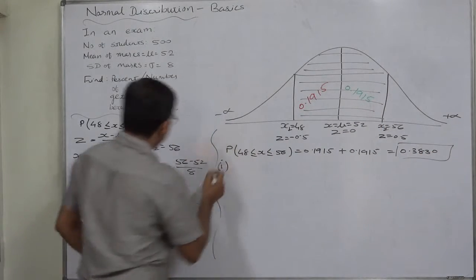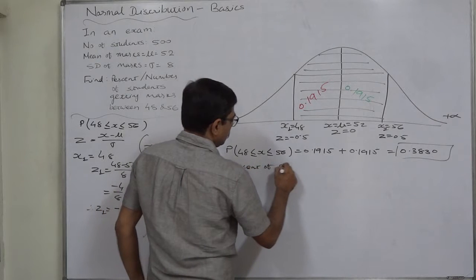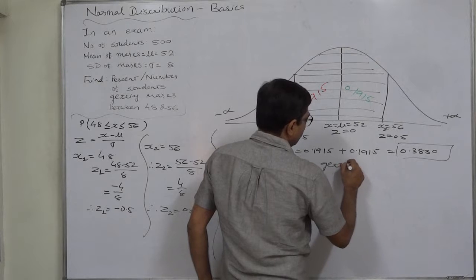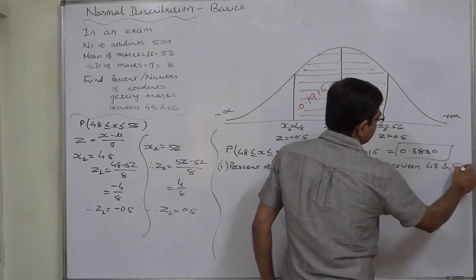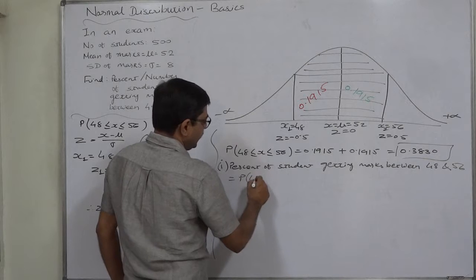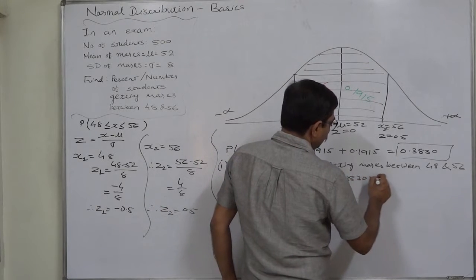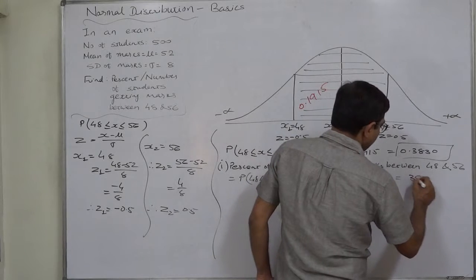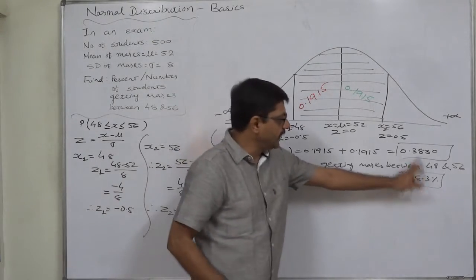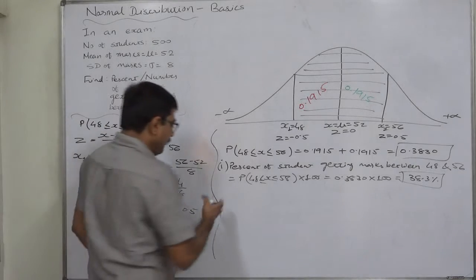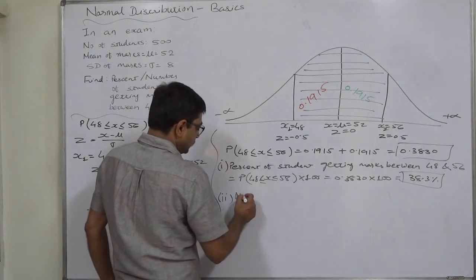The first thing we are interested in is the percentage of students getting marks between 48 and 56. This equals P(48 ≤ X ≤ 56) × 100 = 0.3830 × 100 = 38.3%. That means out of total students, 38.3% obtained marks between 48 and 56. Now if we want to calculate the number of students getting marks in this region, we proceed further.